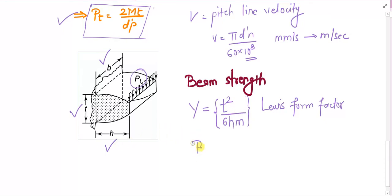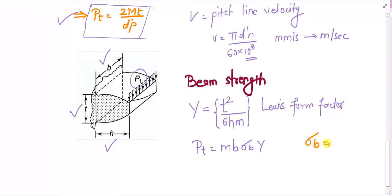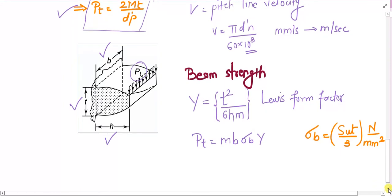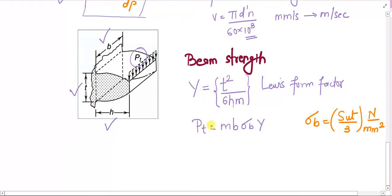On this basis, the beam strength is given as sb = mb·σb·Y, where σb is the safe bending stress. Generally, σb is taken as the ultimate tensile strength of the gear material divided by three: σb = Sut/3 in N/mm². This is the value we will always use, which you can also call the endurance limit for gear design. The value of Sut/3 will be available from the data book or given in the problem.